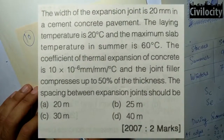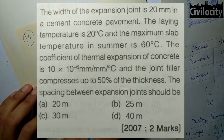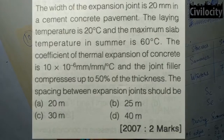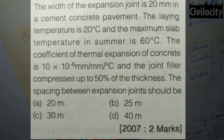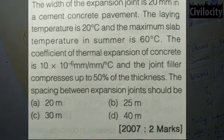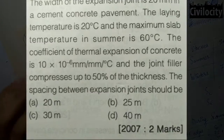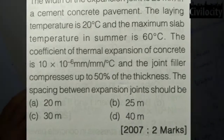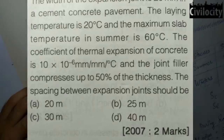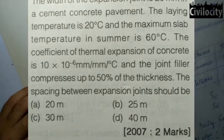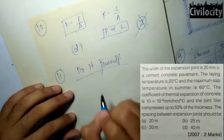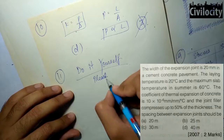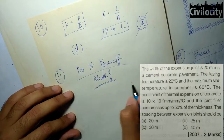The next question gives the width of the expansion joint as 20 mm in a cement concrete pavement. The laying temperature is 20°C and the maximum slab temperature in summer is 60°C. The coefficient of thermal expansion of concrete is 10 × 10⁻⁶ per °C, and the joint filler compresses up to 50% of its thickness. This question is the same type as our previous expansion joint spacing question — put in the values and calculate the spacing. Please give your answer in the comments below.